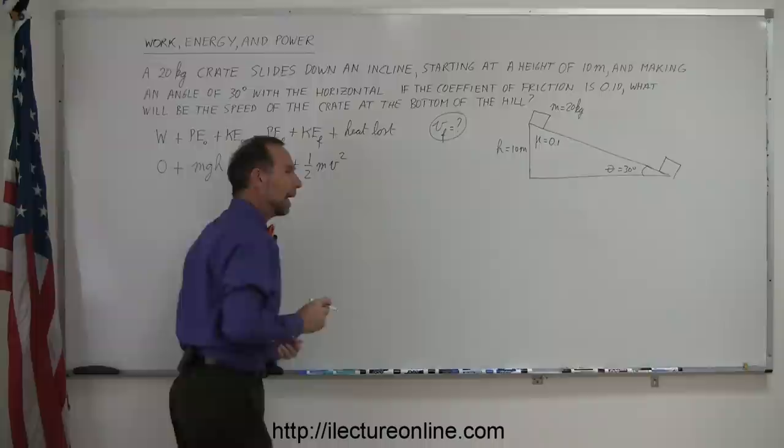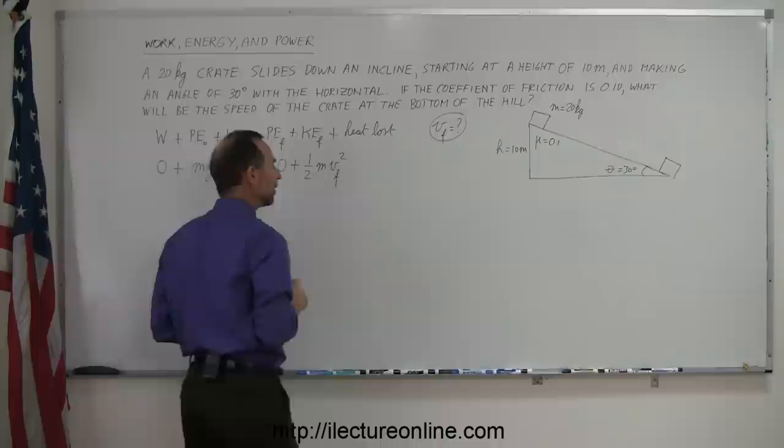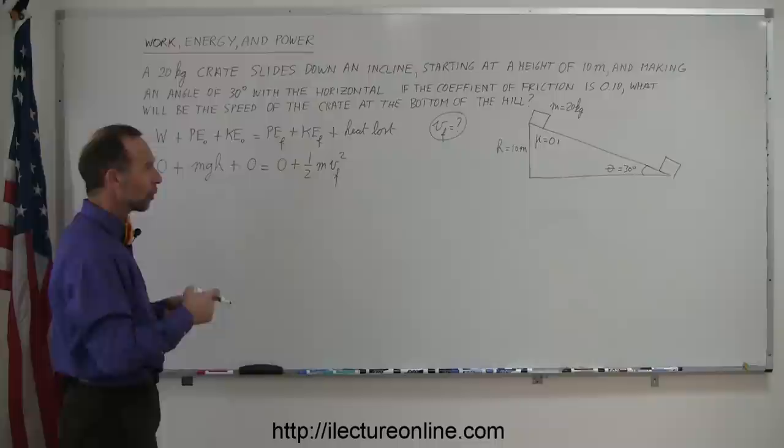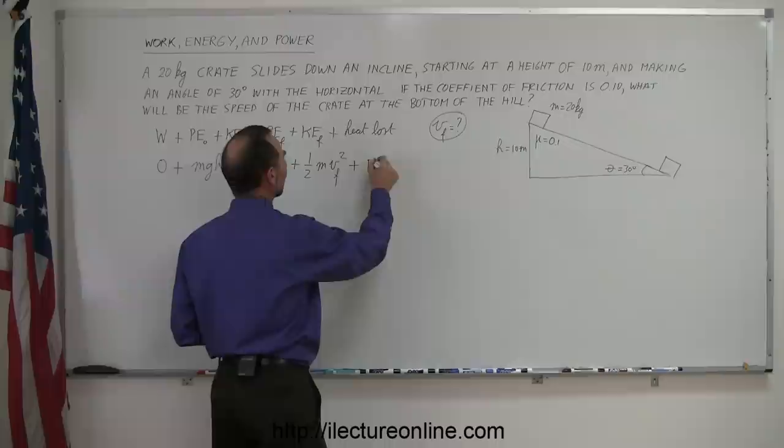If you end up with a negative answer for the velocity, that would be a good indication that there's too much friction and the crate wouldn't slide in the first place. Let's put v sub f to indicate that's the final velocity. The heat lost is the energy lost by overcoming friction, so that would be equal to the friction force times the distance that the crate slides down the hill.